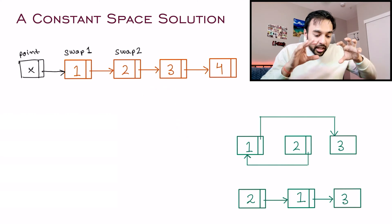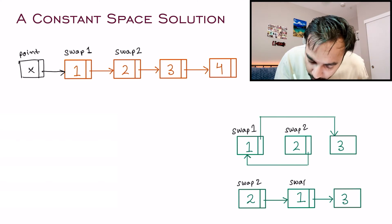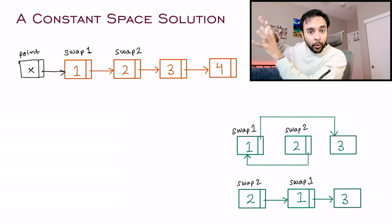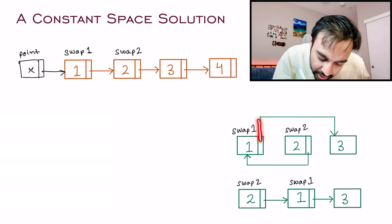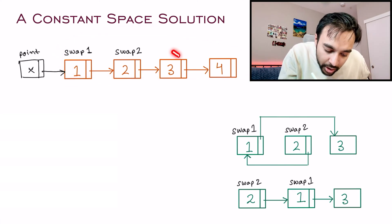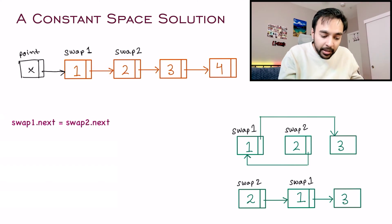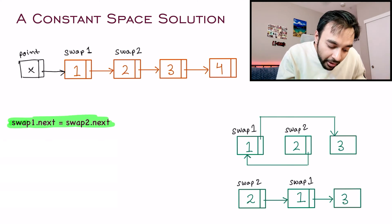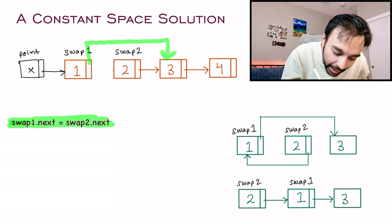Start one by one. Look at swap one: its next pointer is currently pointing at node three. In the desired result, you can reach node three via swap two's next pointer. So you modify this by doing swap1.next = swap2.next. Once you execute this, swap one's original next is replaced, and swap one's next will now point to swap two's next.